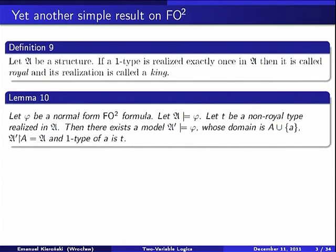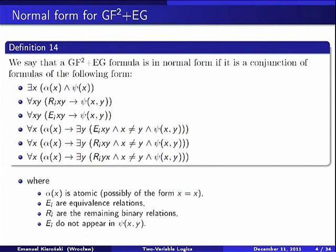Another simple result about two-variable logic, useful today, is that if we have an arbitrary model of a formula phi and take an arbitrary non-royal one-type realized in this model, then we can add an additional copy of this one-type to the model. This was the second result from yesterday, a very simple observation.